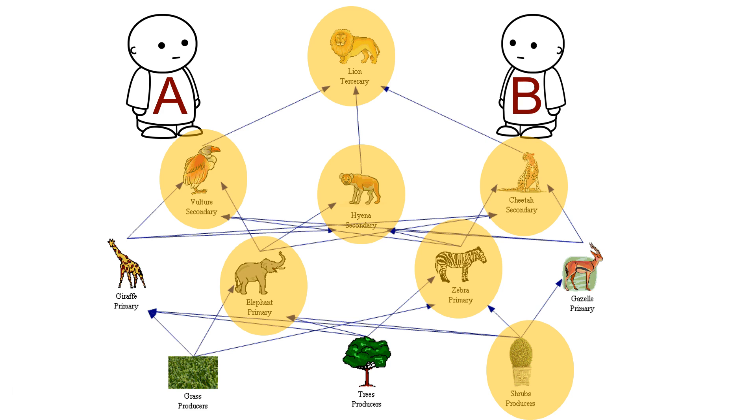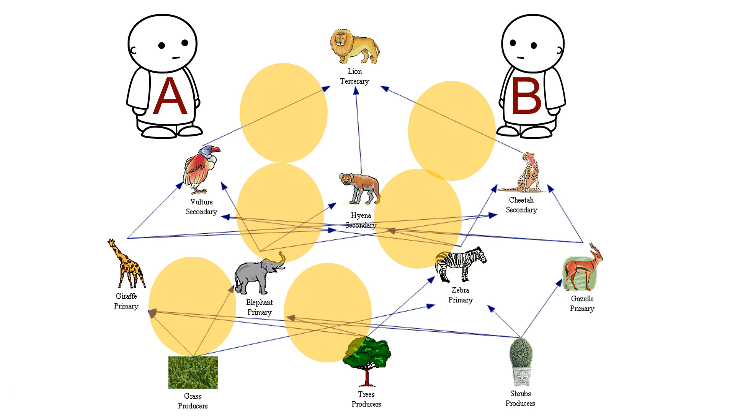Child B already possesses a schema of knowledge about the animals, so only needs to concentrate on the interactions in the food chain, a much simpler task.